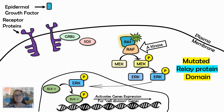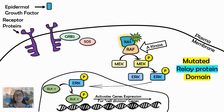That is my summary for AP Bio 4.4 on different changes that could happen within cell signaling pathways and how they can disrupt and alter the cell response.